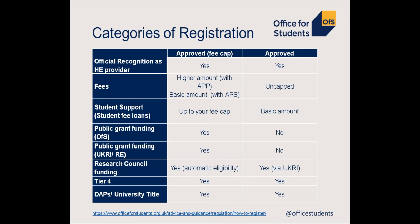As an Approved Fee Cap provider, your eligible students will be able to access tuition fee loans up to your fee cap — the basic or higher amount depending on the fees you intend to charge. Your eligible postgraduate students will be able to access student support and any eligible students will be able to access the disabled students allowance. You'll be eligible to receive public grant funding from the OFS and from UK Research and Innovation, and you'll also be automatically eligible for Research Council funding and to apply for a Tier 4 sponsorship licence, degree awarding powers and university title.